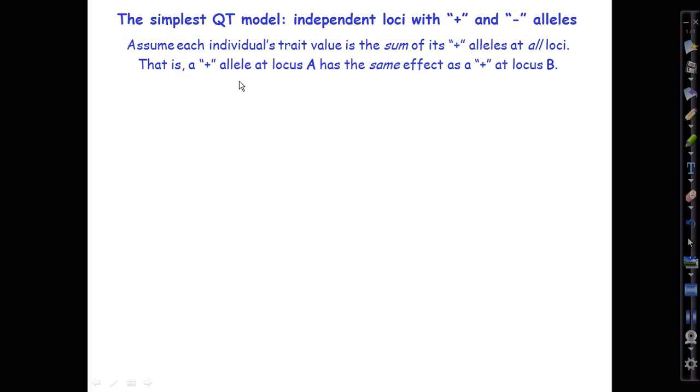That is, we're assuming a plus allele at locus A will have the same effect, or at least the same kind of effect, as a plus allele at locus B. That's the key idea. That's what's new, and probably new to you, if you haven't studied this subject before. It then follows on just that simple assumption that we have a bunch of loci, all of which have alleles that can make equivalent, substitutable contributions to the trait value.